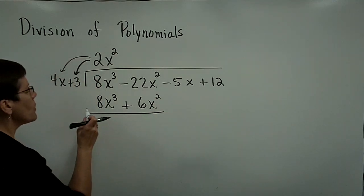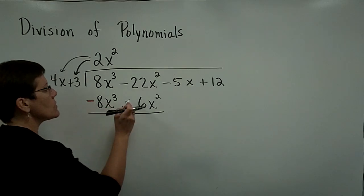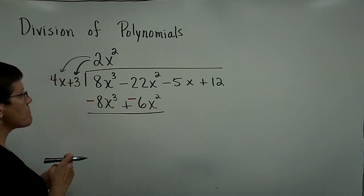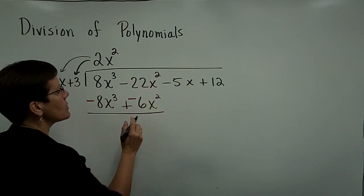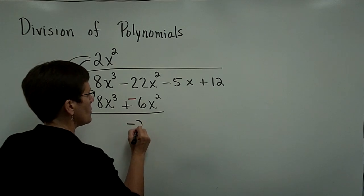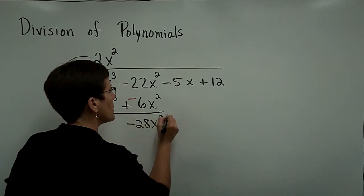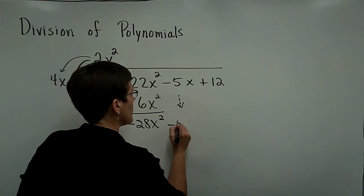Let's now subtract, or add the opposite, so I'll change this sign and change this sign. These two like terms combine to be a negative 28x squared, and I bring down the minus 5x.